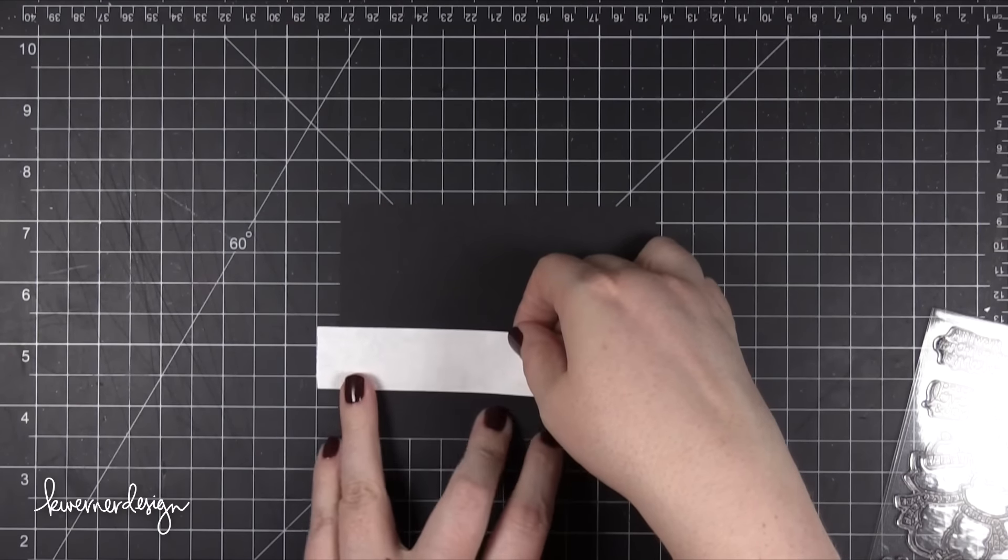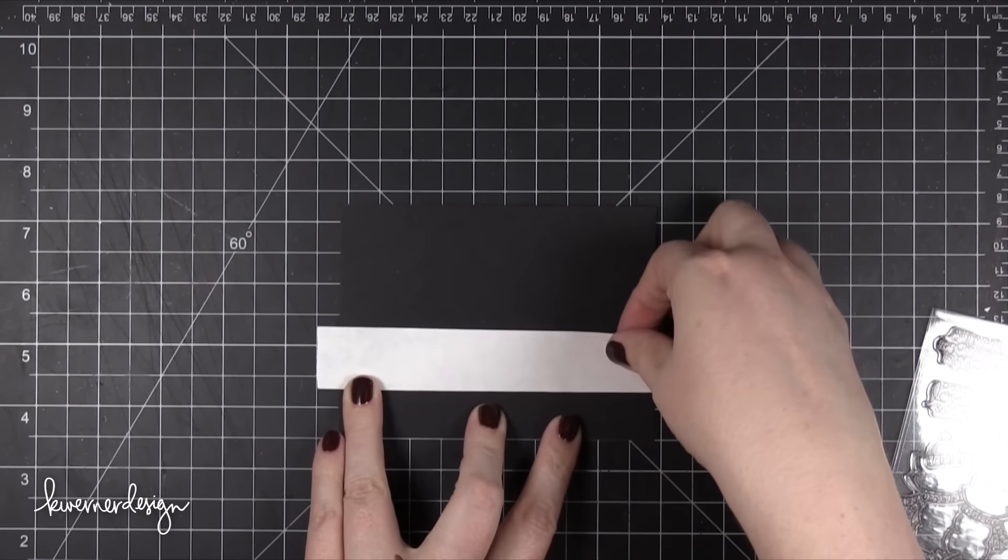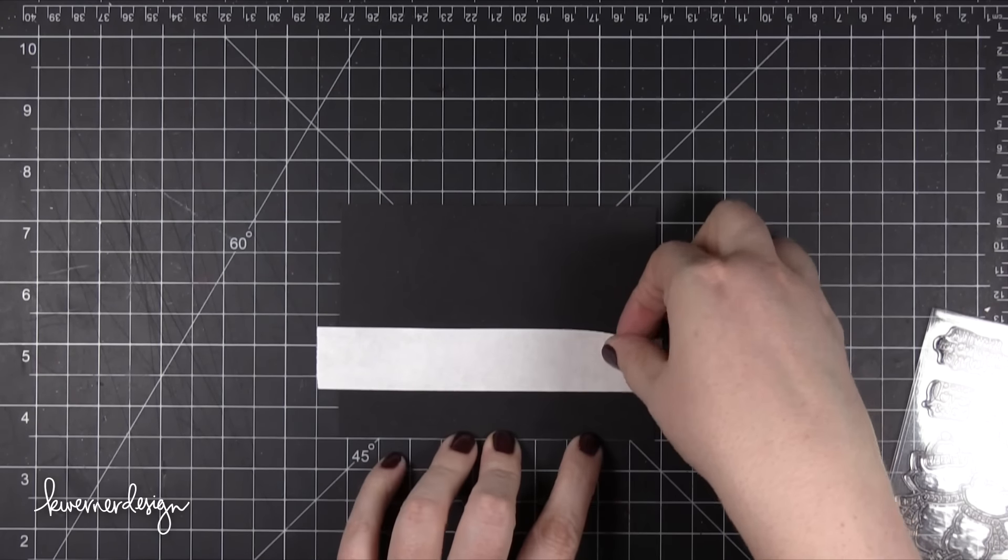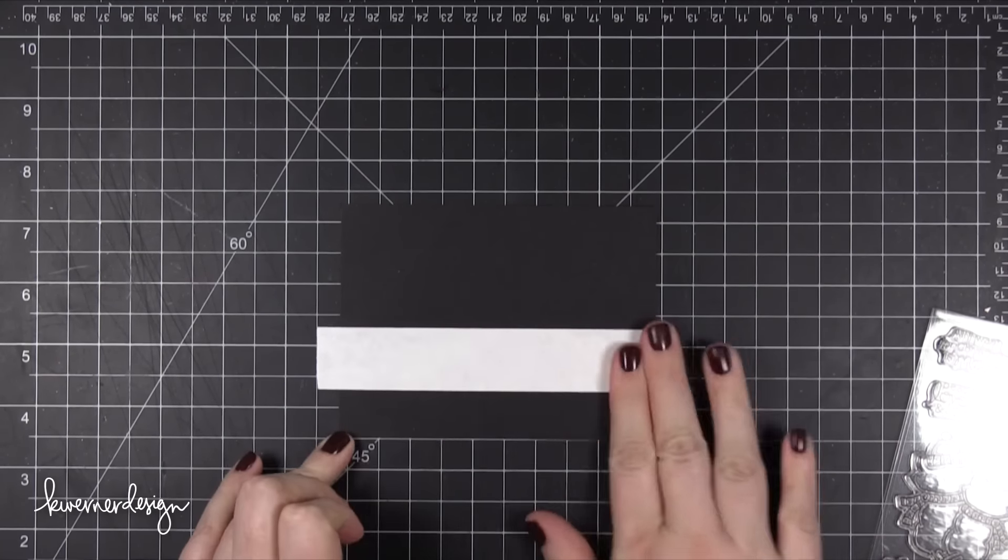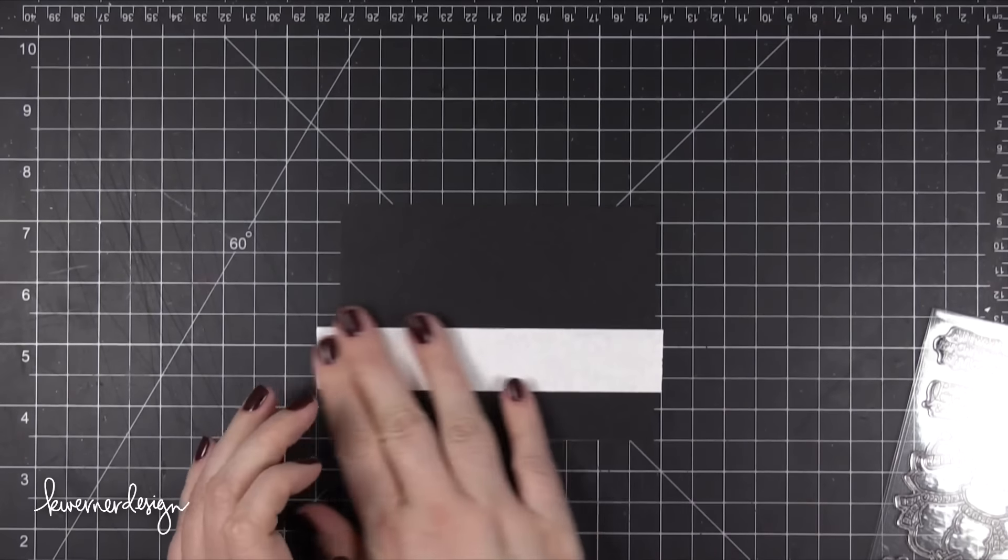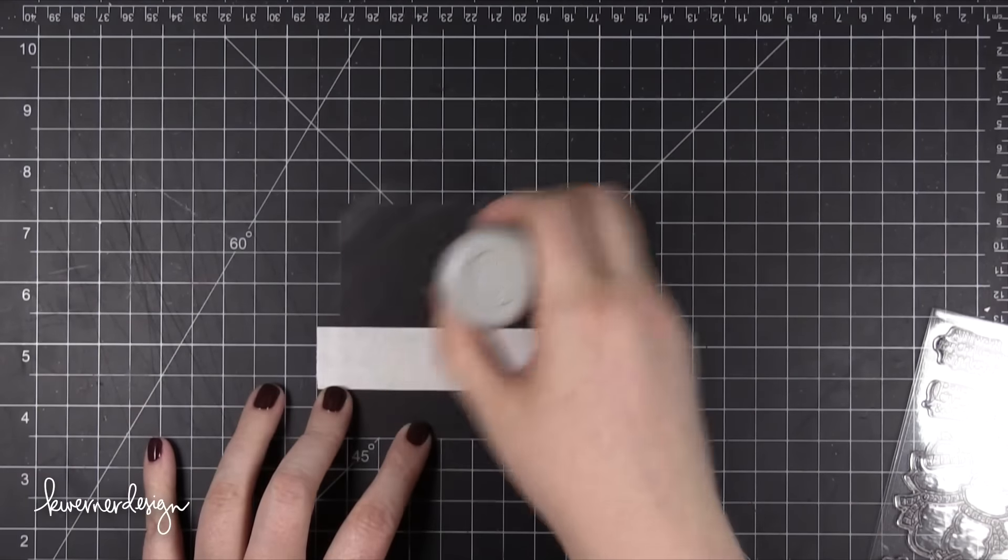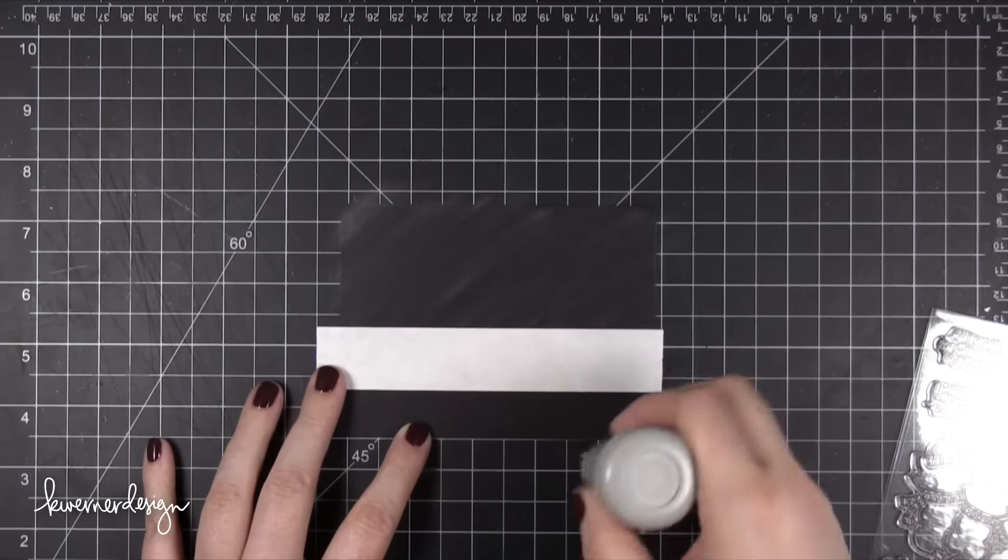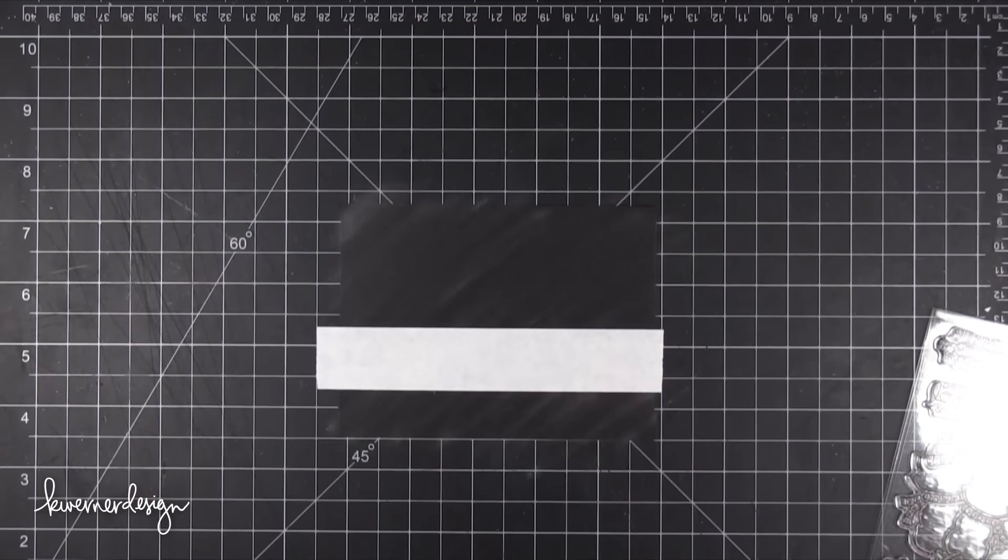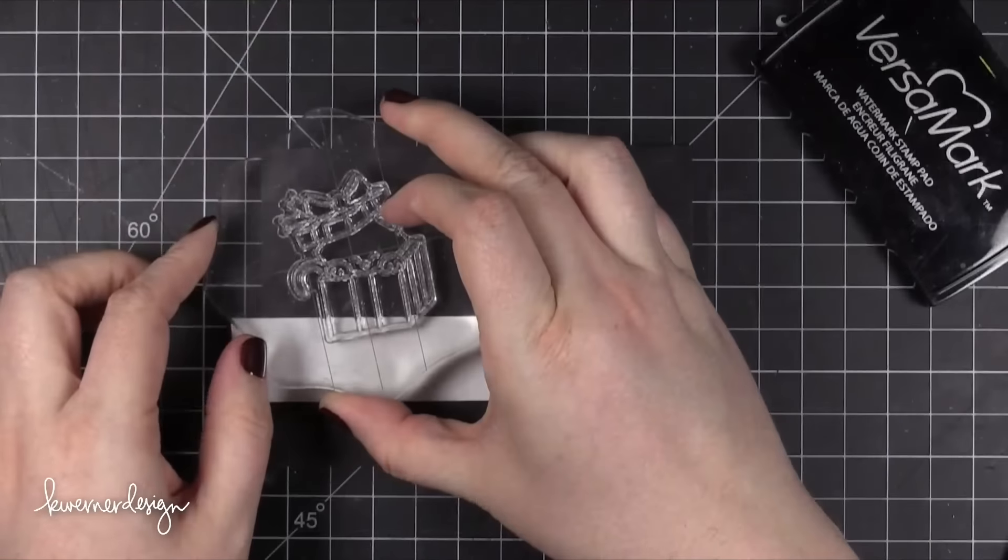I've cut my black card stock to 5 inches wide by 3 3 quarters tall and I'm applying a 1 inch Post-It tape strip right across that piece there. It's about 3 quarters of an inch from the bottom of the card stock and it goes all the way across. I'm going to do a bunch of embossing, so I'm using my EK Success Powder Tool to prep that area for embossing.